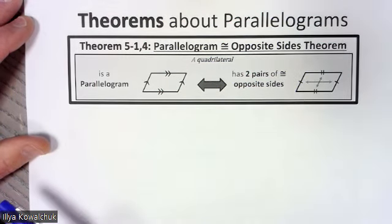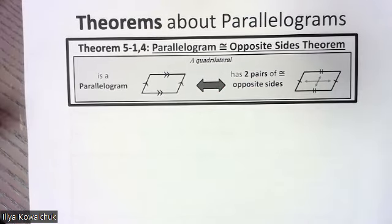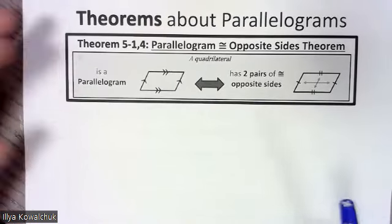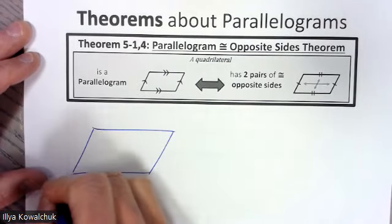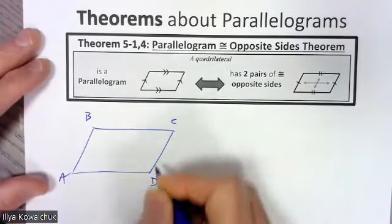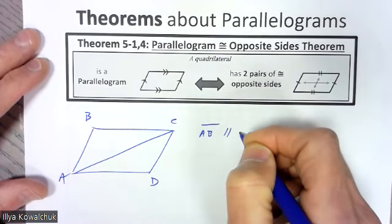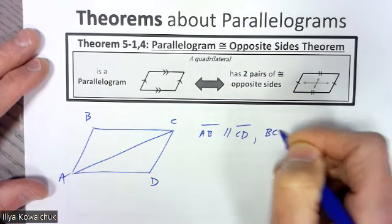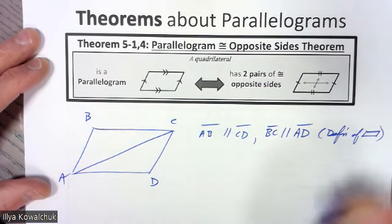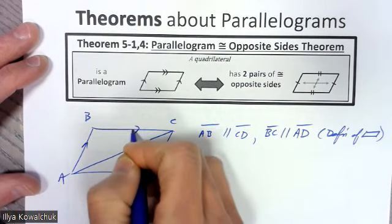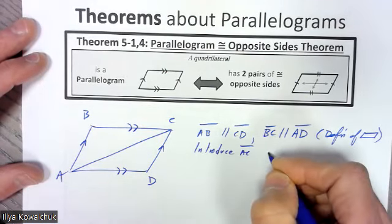In the notes there was a proof — it's a paragraph proof. What we know is: if we start with a parallelogram A-B-C-D and introduce a diagonal, then by definition segment AB is parallel to segment CD, and BC is parallel to AD. That's our definition of a parallelogram. Then we introduce segment AC by the line postulate.